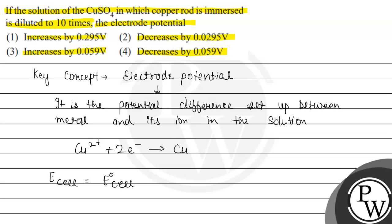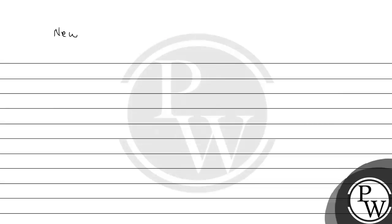E cell is equal to E naught cell minus 0.0591 divided by n factor. And n represents the number of electrons in the balanced chemical equation and that are 2, log of product concentration divided by the reactant concentration. The new concentration of Cu²⁺ is 1/10 times of the Cu²⁺ because dilution 10 times means concentration decreases.